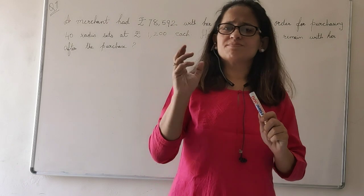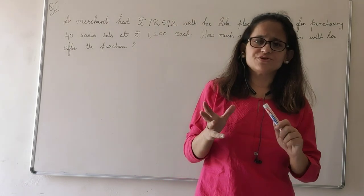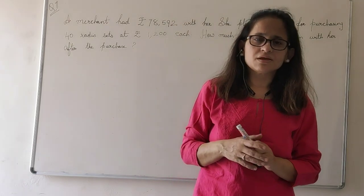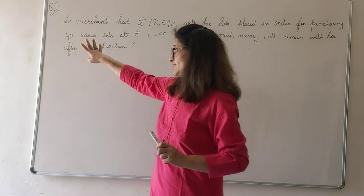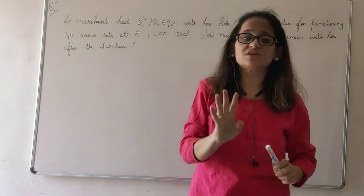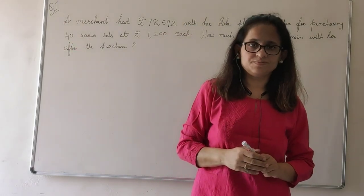Now she placed an order in a radio manufacturing factory of 40 radio sets. The order she gave was 40 radio sets. Understood?